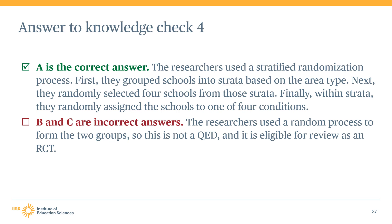Note that the authors randomly chose the four schools in each stratum subject to random assignment. If the researchers had instead used a non-random method to choose those schools, or if the schools had volunteered before random assignment, the study would still be considered an RCT. This is because it does not matter how the researchers identify the population of units subject to randomization.